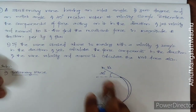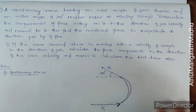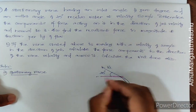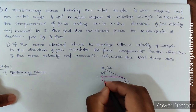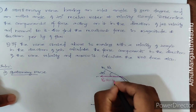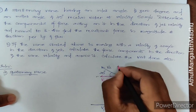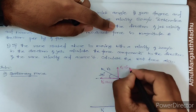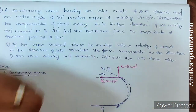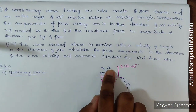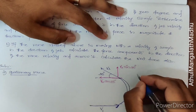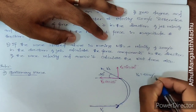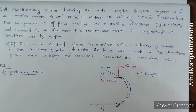Now I will resolve v2 into its components. The component in the x-direction will be v2 cos 25 degree and in the y-direction it will be v2 sin 25 degree. The value of v2 is given as 50 meter per second.